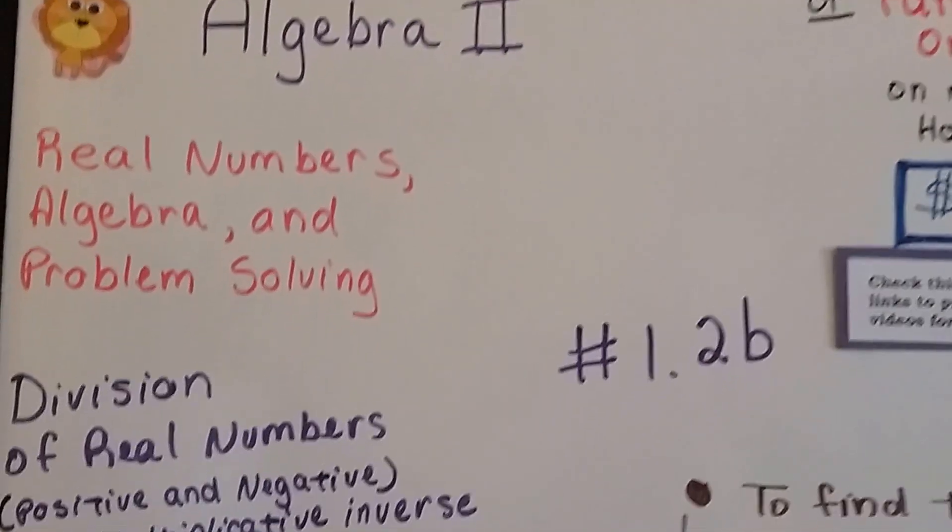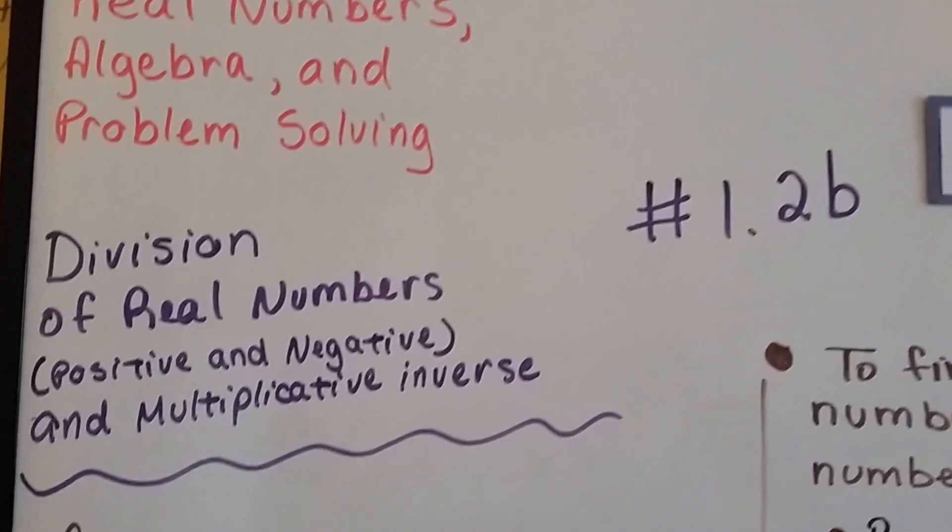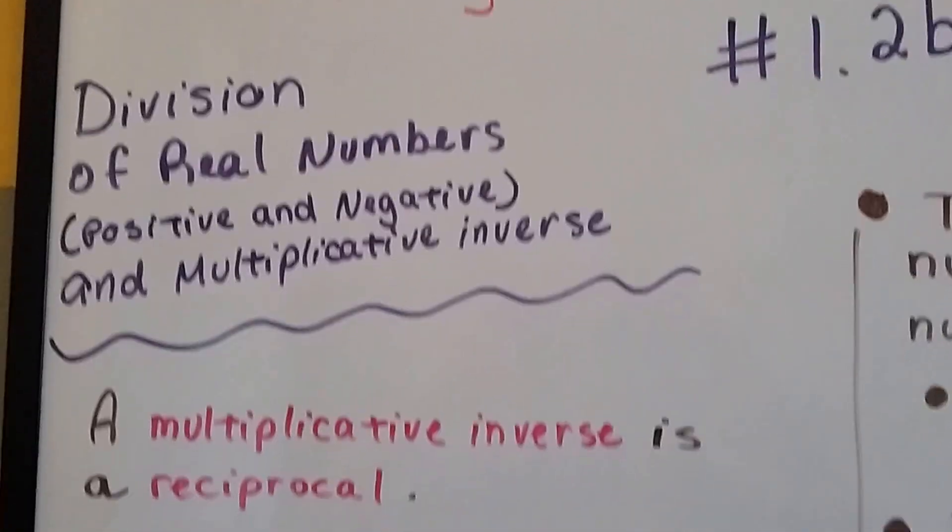Algebra 2, 1.2b, division of real numbers, positive and negative, and a multiplicative inverse.